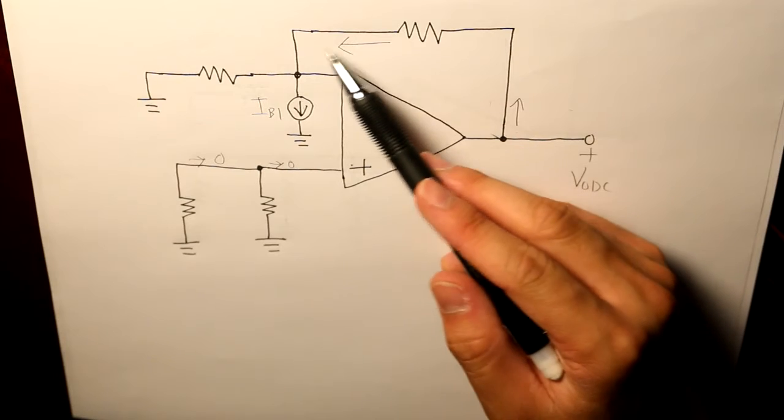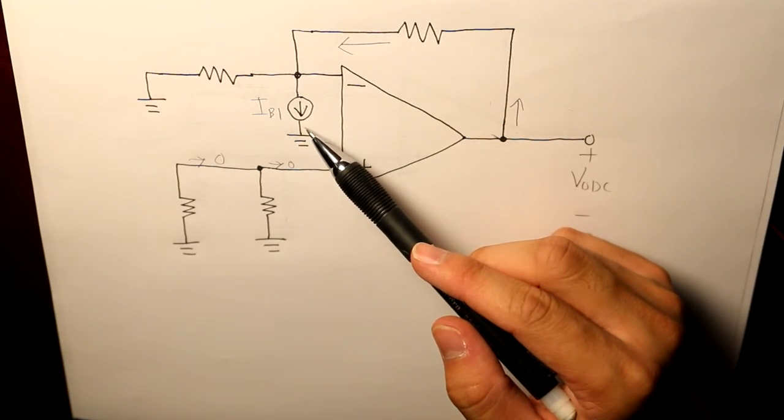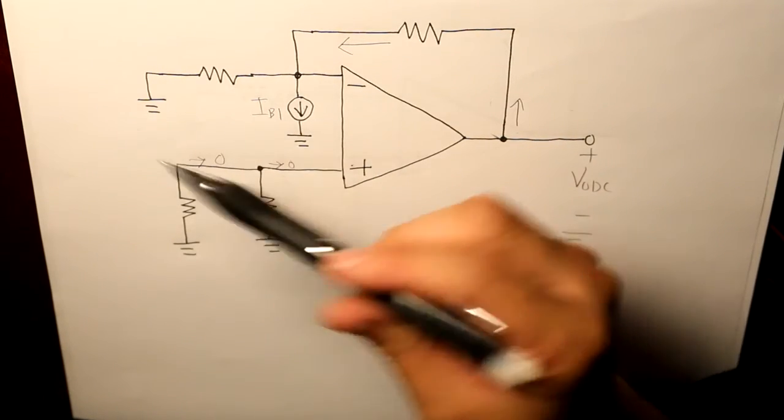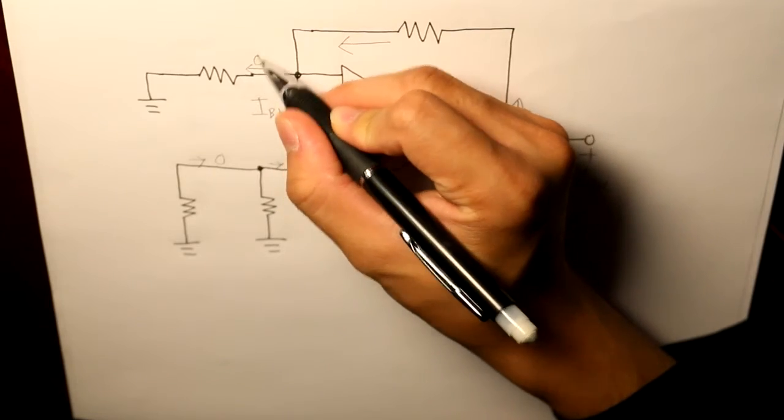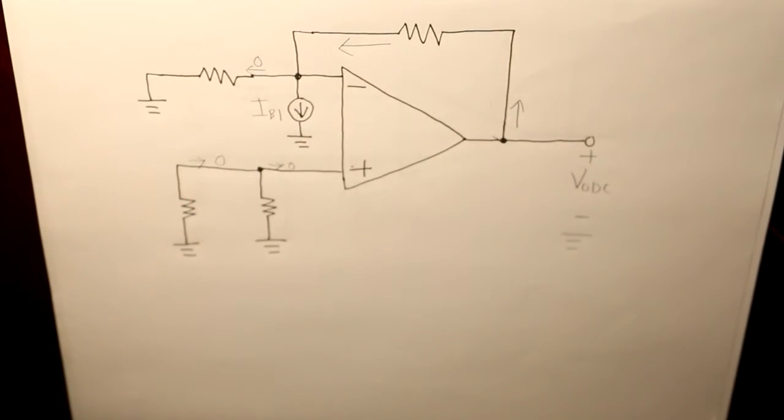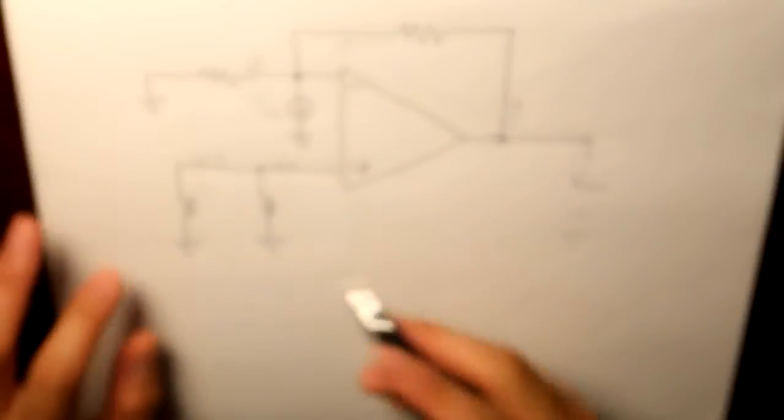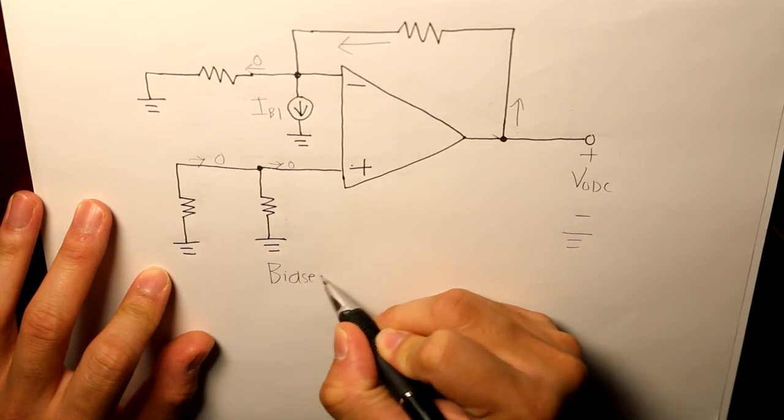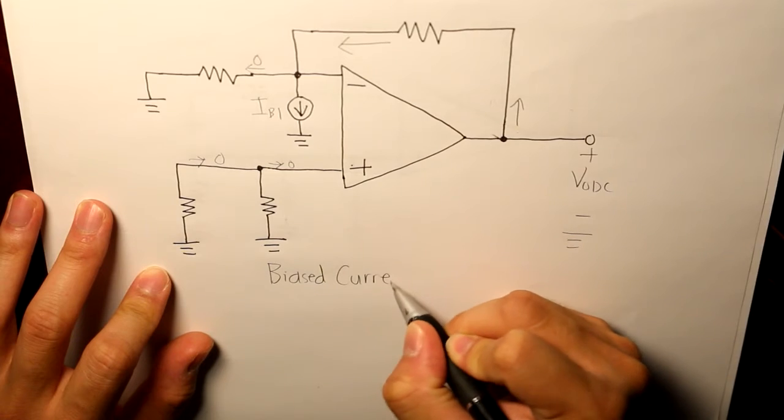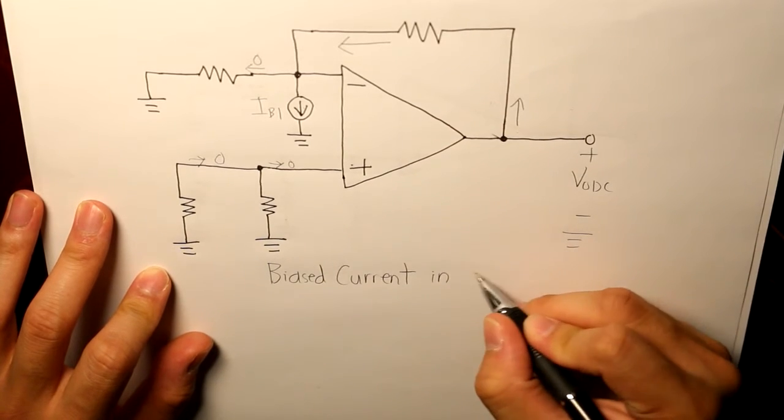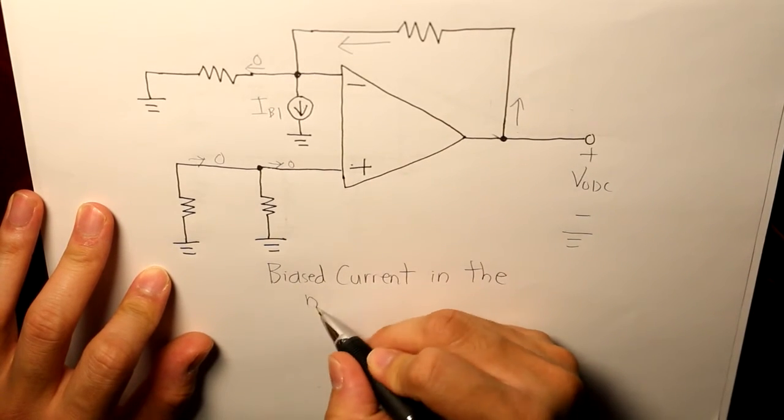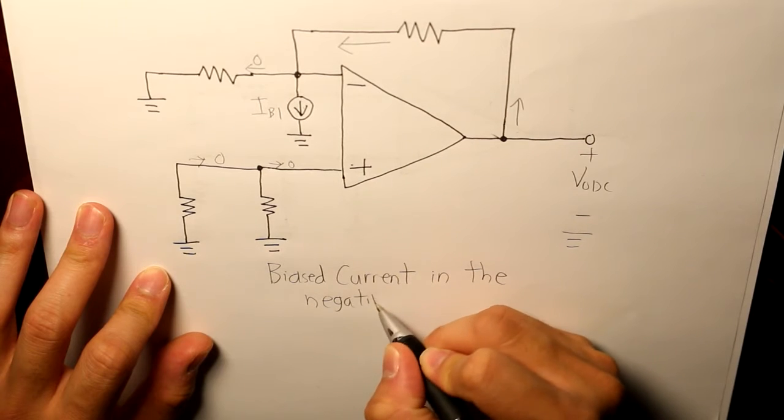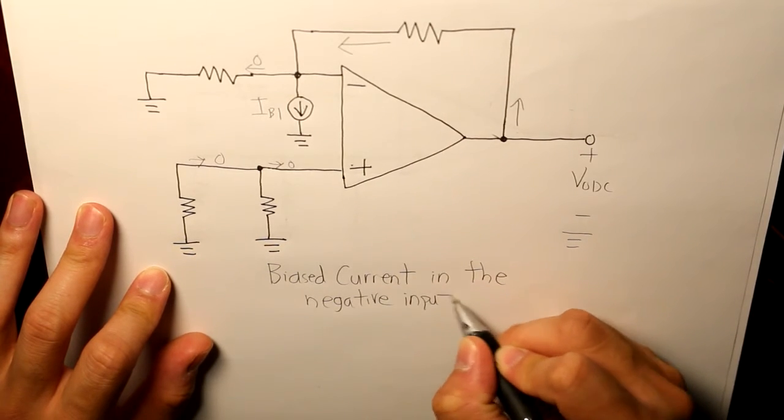And then it goes through IB1, through the current source, and none of the current travels anywhere between this branch. And we can name this the biased current in the negative input terminal.